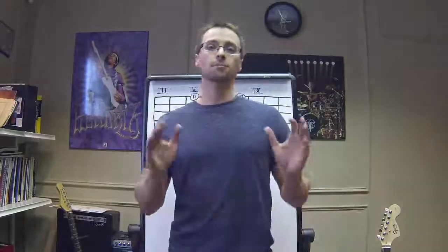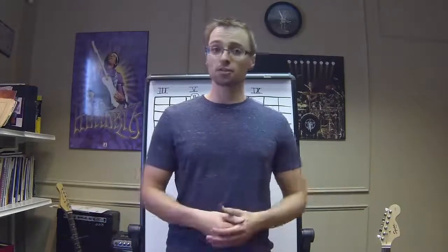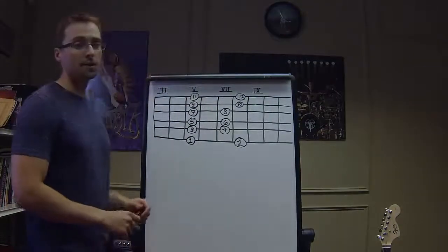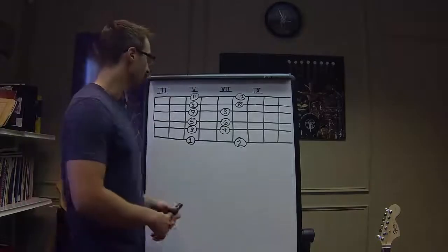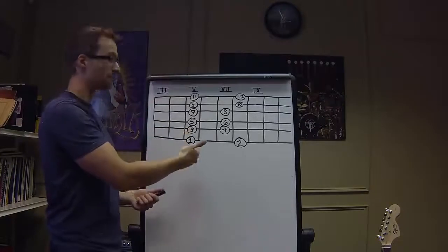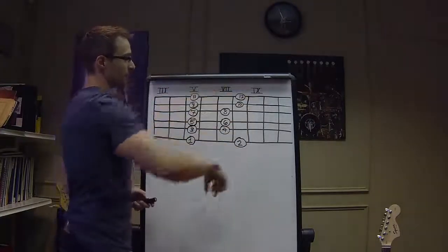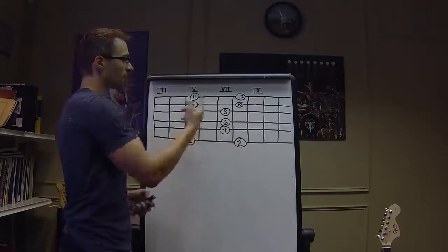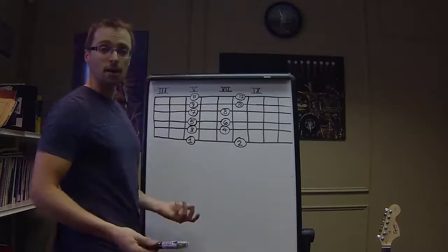I'm going to be using the minor pentatonic scale as an example to create our sequences today. The concept of a sequence can be applied to any scale, any pattern that you might play, and as I said before, you can even use this with an arpeggio pattern if you wanted to. Behind me, on my board, I have a typical A minor pentatonic scale. This is the first position. You can see, if you look at my little fretboard diagram, this is the fifth fret, third fret, fifth fret, seventh fret, and the ninth fret.